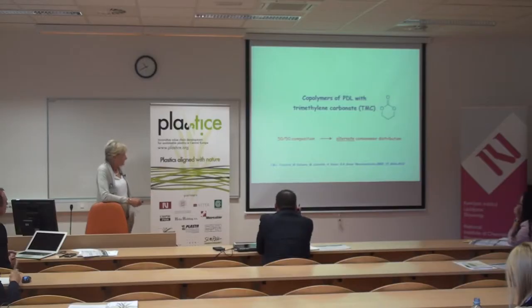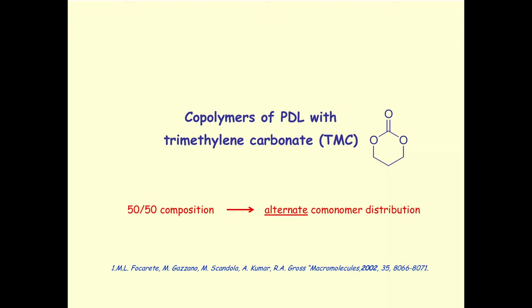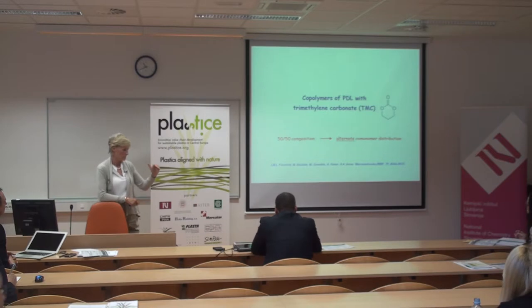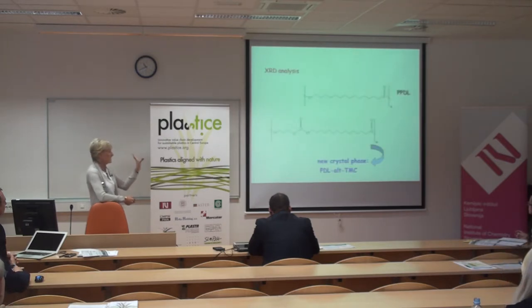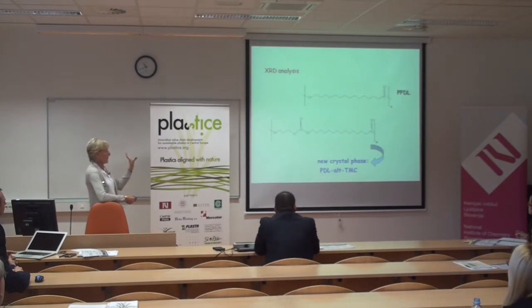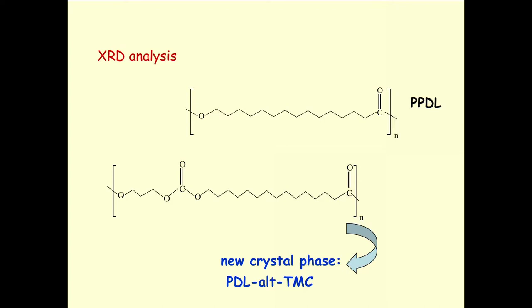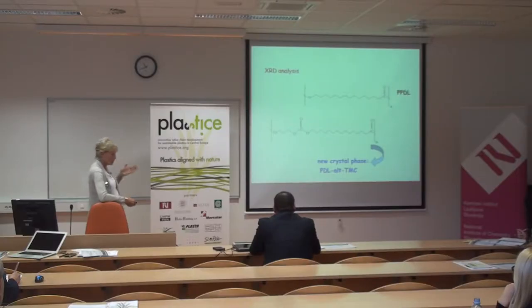The last example in this series uses trimethylene carbonate, co-polymerized with pentadecalactone at 50–50 composition. With increasing reaction time, the structure begins blocky but evolves toward alternating rather than random sequences. With increasing alternate sequences, a new crystal phase appears. We always observe high crystallinity, but with a new crystal phase corresponding to crystallization of alternating pentadecalactone–trimethylene carbonate units — again a quite unusual crystallization behavior.